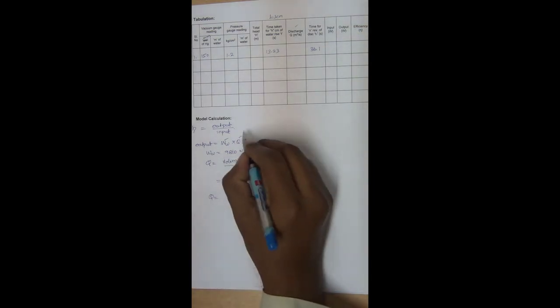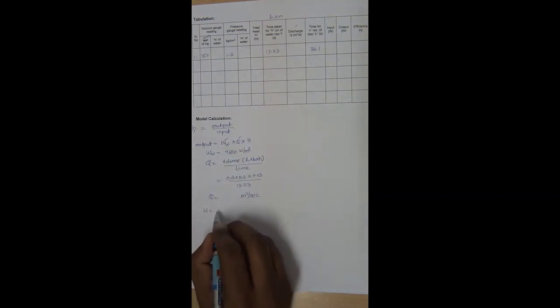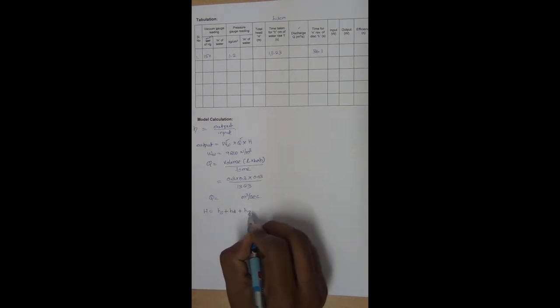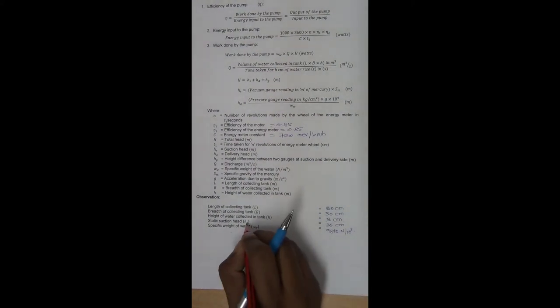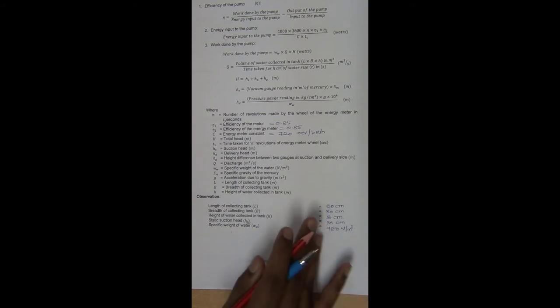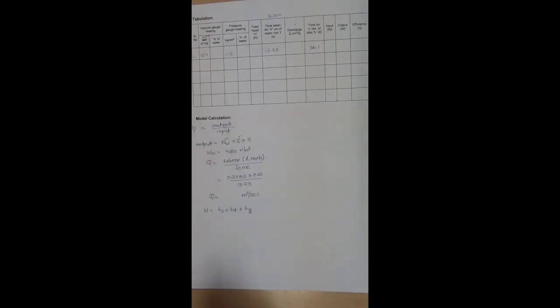Now to calculate H we have Hs plus Hd plus we have another term called Hg. So actually in this formula there is a term called static suction head. It is Hg. So it is the difference between two pressure gauge. So it is going to be constant. So how to calculate Hs.